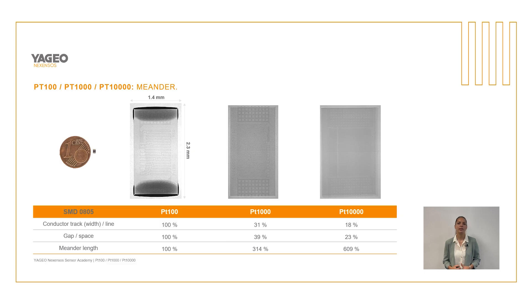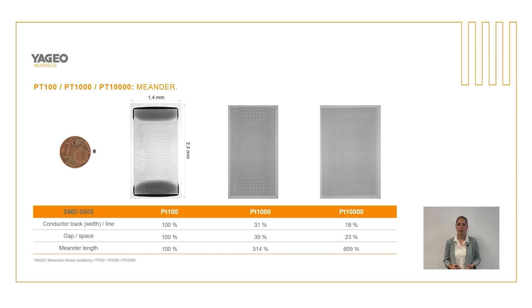Shown is an SMD0805. To clarify the properties, we see the comparison to one grain of sand. From the x-rays we can see the meander structure of the sensor. The table shows us the width of the conducting path, the width between them, and the length of the meander in percentage.